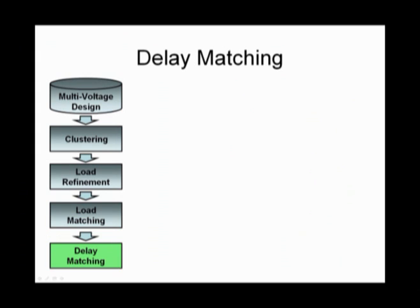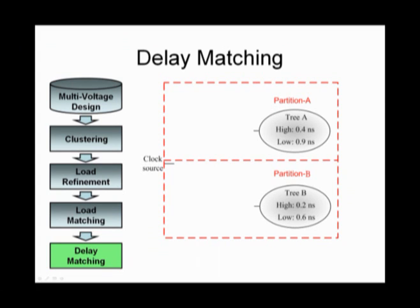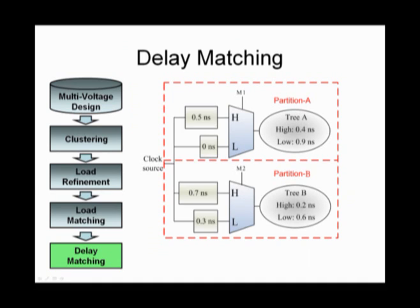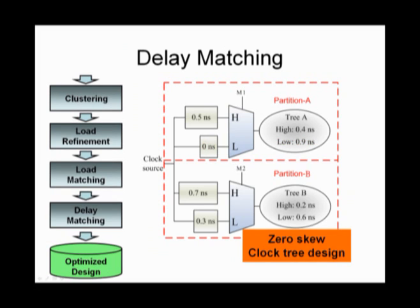Finally, we minimize the skew between tree A and tree B. After these steps, we can calculate the two tree's latencies in different voltage. Our approach combines multiplexing and delay matching. We insert delays and balance the four voltage conditions. As a result, we can construct a zero-skew multi-voltage clock tree design.